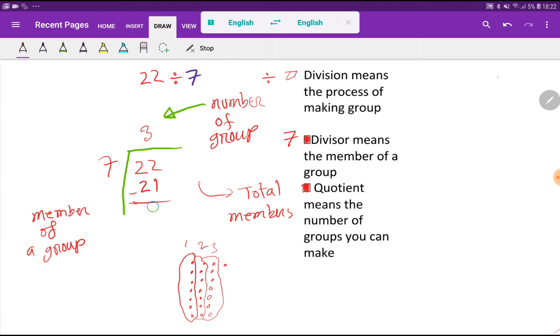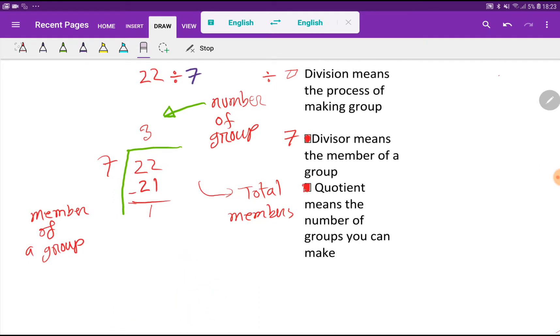So if you subtract, then you will get 1. This one is called remainder. There are some ways to write this remainder. You can write this remainder here. You can write capital R with 1: 3 remainder 1.